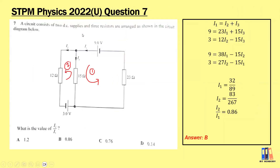The next question is from the 2022 past year paper, where we need to find the value of I2 over I1. You can do it on your own. Using the Kirchhoff current law and two Kirchhoff voltage law equations, you work through intermediate steps to get the values for I1 and I2. The final answer is 0.86. Answer is B. If you still have questions about Kirchhoff's laws, leave them in the comment section below.